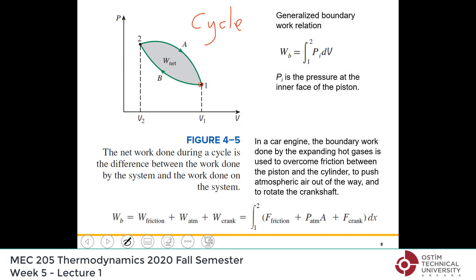In the case of a cycle — if you have a compression process and then an expansion process returning to the initial state — the net area is the net work done. This is what happens in car engines: we have compression, then we burn fuel and increase the pressure, then expansion at high pressure. The average pressure during expansion is higher, and at the end we take in fresh air. So this net enclosed area on the PV diagram is the net work done in car engines.